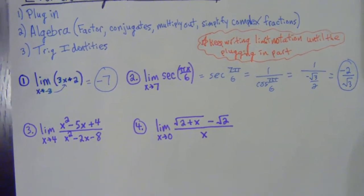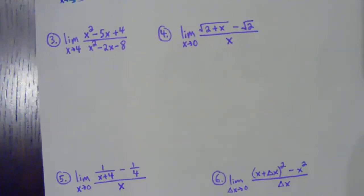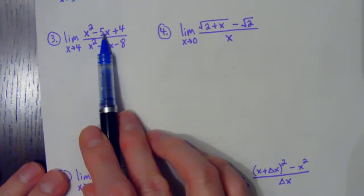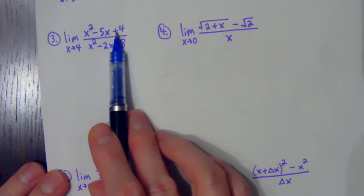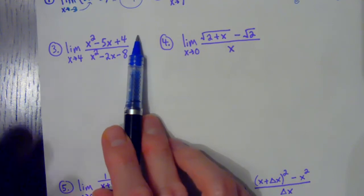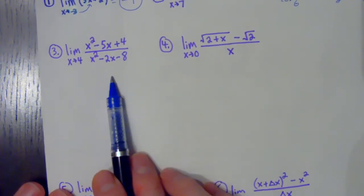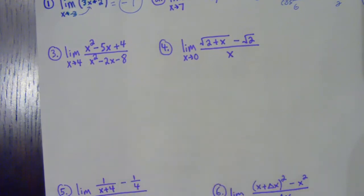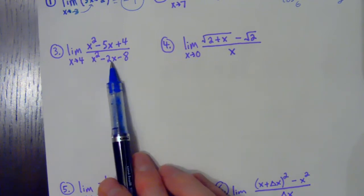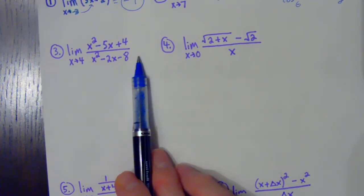Now, as I look at these problems, if I try to plug in, I'm going to get 16 minus 20, which is negative four, plus four — I get zero on the top. Here's what you can't do: you can't get zero on the top and say you're going to get zero for your final answer, because zero divided by anything is zero. That is completely false thinking. Because look — you plug four into the bottom, you get 16 minus 8, which is 8, minus 8, which is also zero.